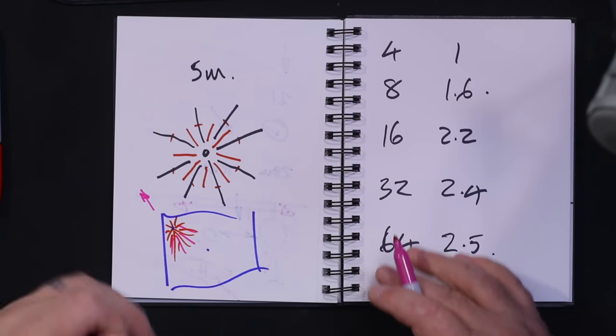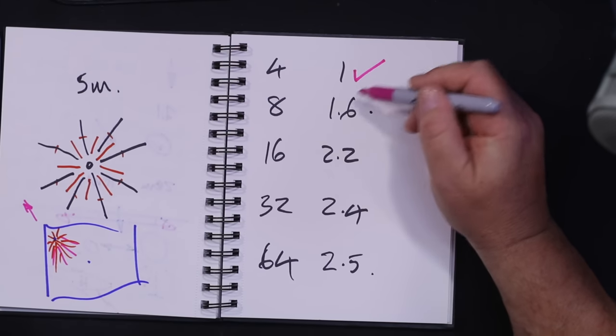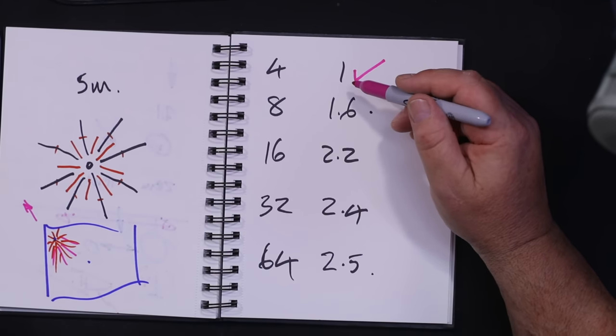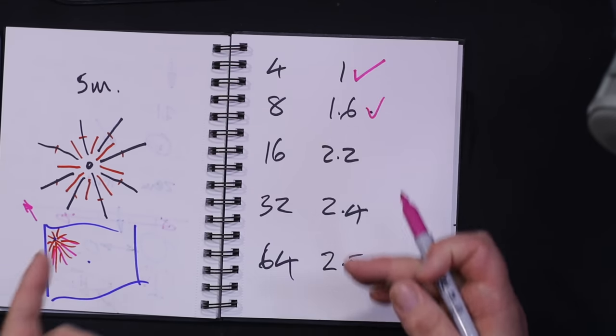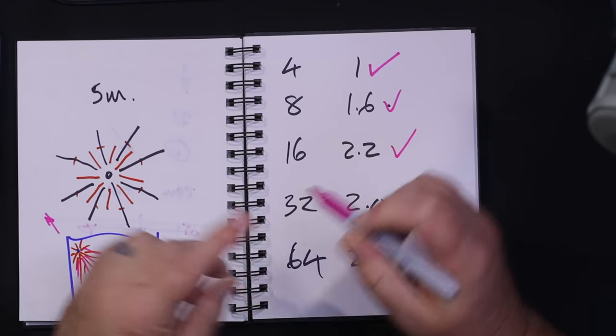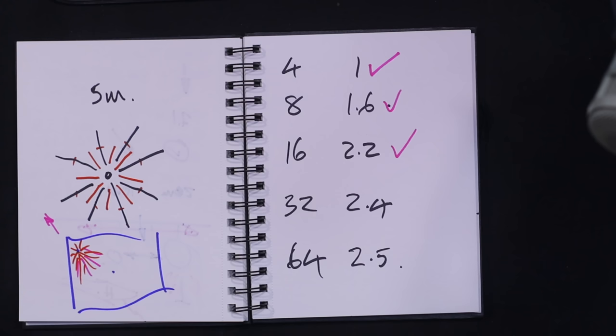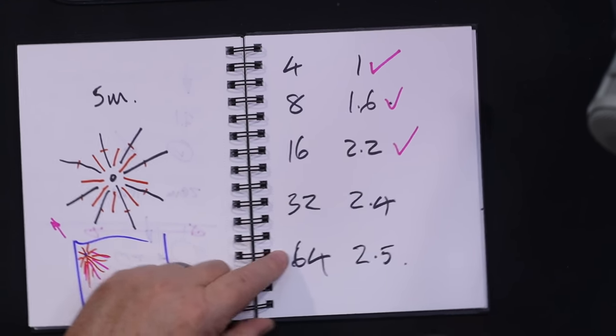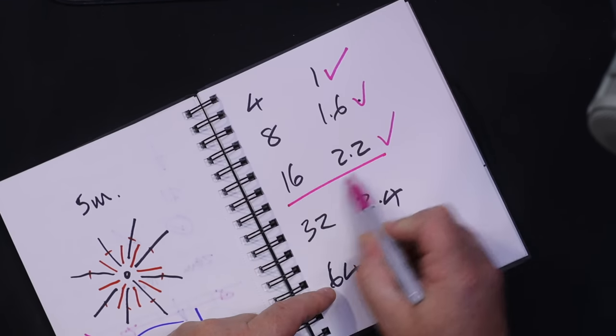What happens to your signal that way? It might be a dB down - that's all. Don't fret about it. If you can get yourself a couple of wavelengths, certainly one wavelength is fine. Two wavelengths and you're about half a dB down. Double it again and you go from 1dB to 2.2dB. Remember, 6dB is supposed to be one S-point, so 1.6dB - you probably won't notice that.